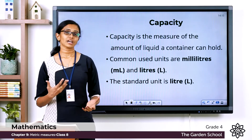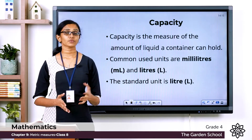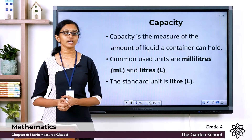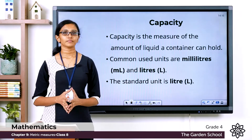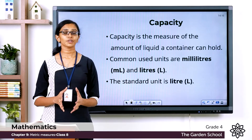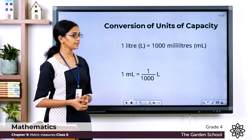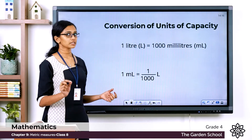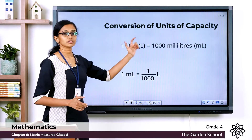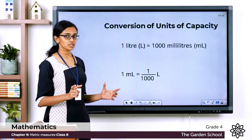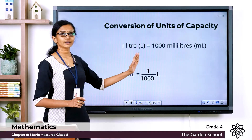We use different units for capacity. The commonly used units are milliliters and liters, but the standard unit of capacity is the liter. Liter is represented with the capital letter L. One liter is equal to one thousand milliliters — make a note of this in your notebook.